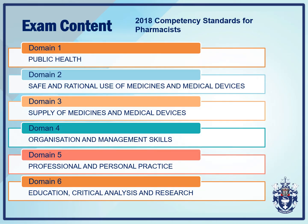The examination is based on the 2018 competency standards for pharmacists. As you already know from your CPD entries, there are 6 domains. Domain 1 is Public Health. Domain 2 is Safe and Rational Use of Medicines and Medical Devices. Domain 3 is the Supply of Medicines and Medical Devices. Domain 4 refers to Organisation and Management Skills. Domain 5 looks at Professional and Personal Practice. And lastly, Domain 6 refers to Education, Critical Analysis and Research.